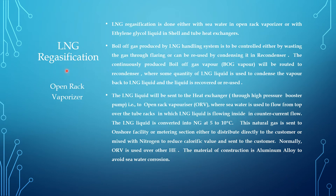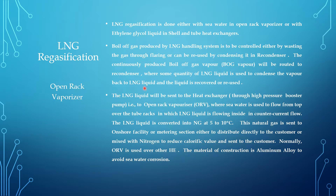LNG regasification is done either with seawater in an open rack vaporizer (ORV), or with ethylene glycol liquid in a shell and tube heat exchanger. Boil-off gas (BOG) is produced in the LNG handling system, whether in a pipeline or storage vessel. This BOG is controlled either by flaring or by reusing it — routing it to a recondenser where LNG liquid condenses the vapor back to LNG liquid.